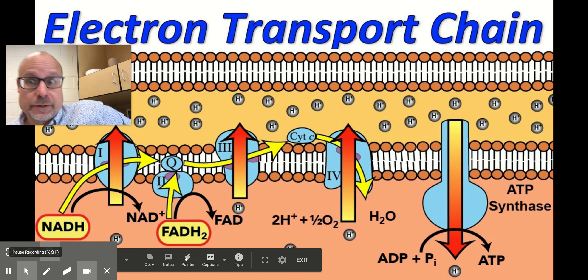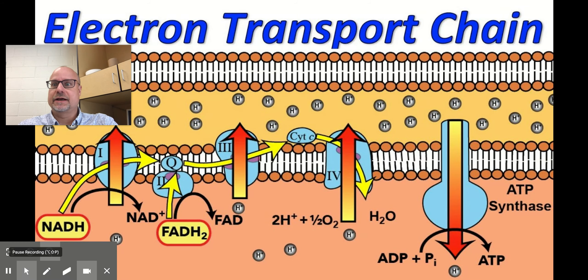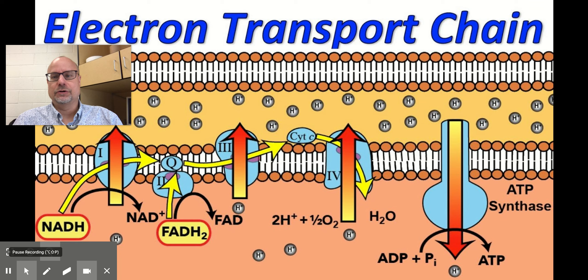All right, so I moved my picture on this one because it was blocking something important. This is the electron transport chain. The electron transport chain is all about basically creating more ATP, as much as you possibly can.